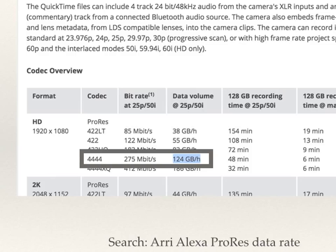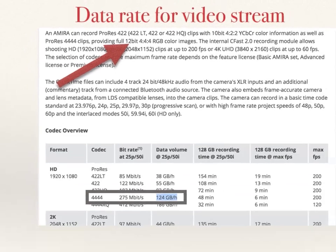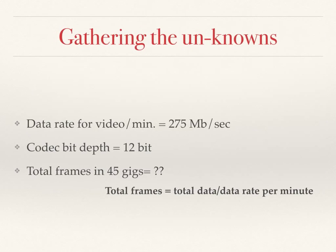Note that this data is at 25 frames per second at 1080p. We're going to be doing 30, so the data will be a little off — if anything, it'll be conservative, and that's what we want. The bit depth is also provided: 4444 clips are full 12-bit bit depth RGB images. So that's the number we need to remember for later. Data rate for video per minute is 275 megabits per second — we still need to convert that to per minute — and the codec bit depth is 12.